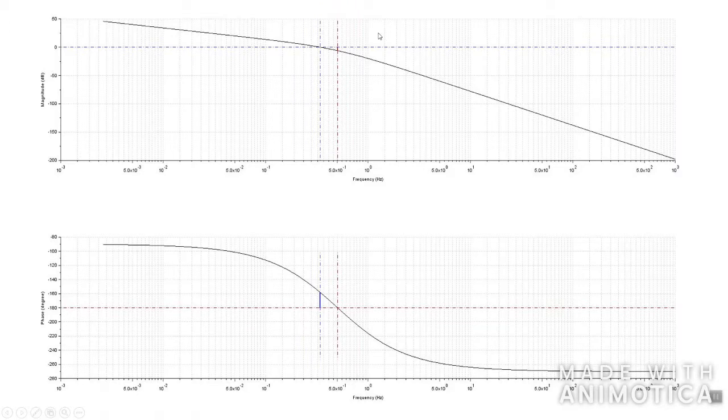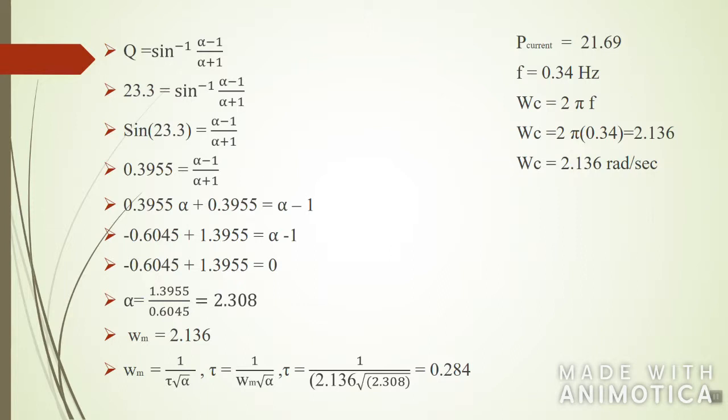This is the drawing of the system. If we see here, this is the magnitude and this one is the phase of the initial G(s). So we need to shift this system at least by 30 degrees. We know that the current phase is 21.69 and the frequency, the gain crossover frequency that we obtained, was 0.34 hertz. But we need to have the omega of that system, so we need to use radian values.